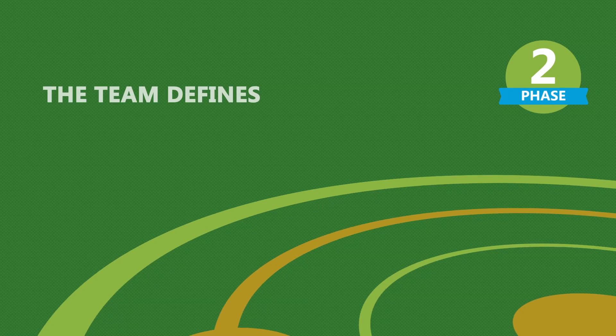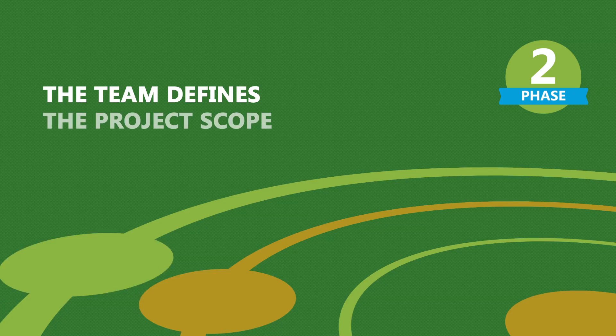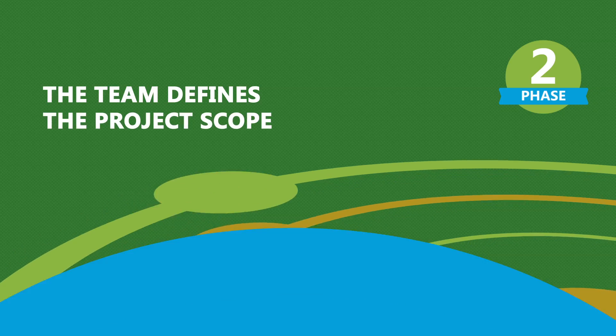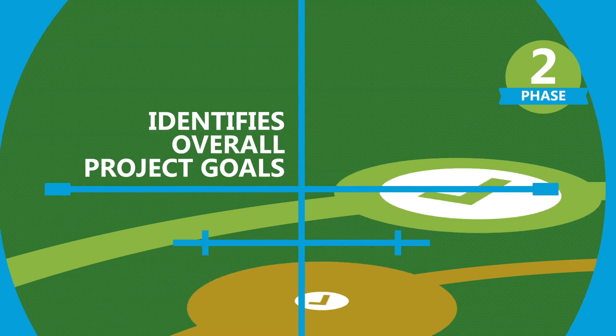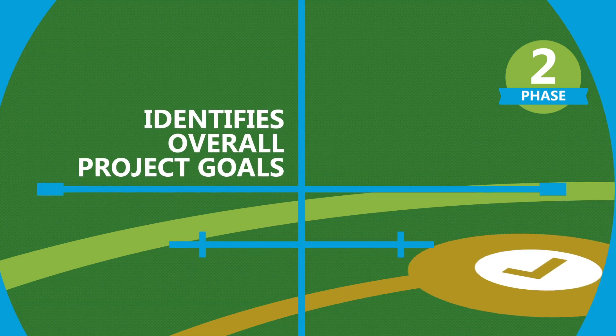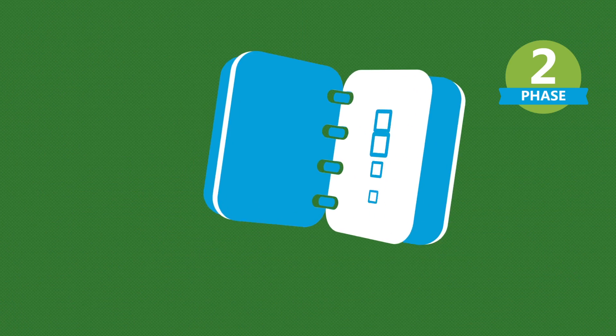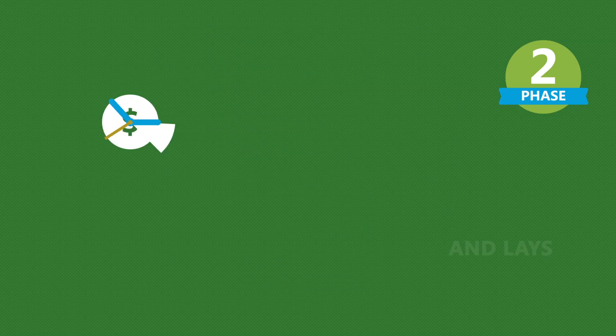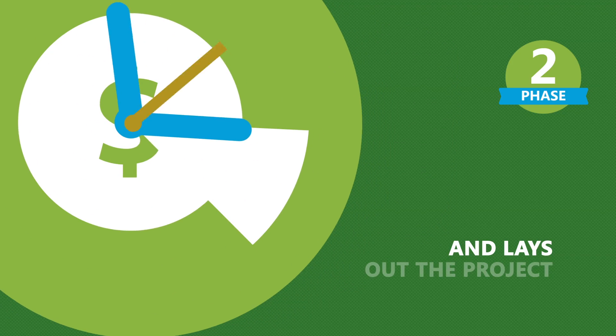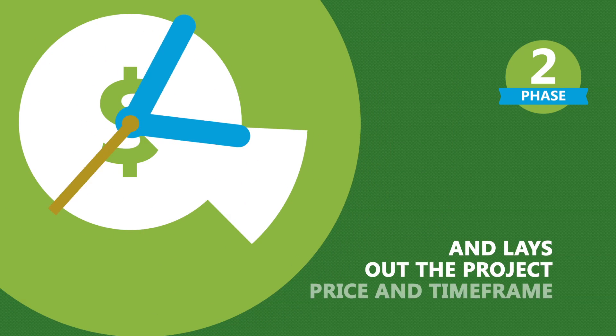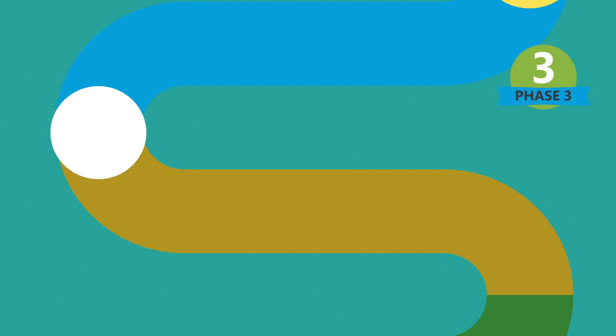Phase 2. The team defines the project scope, identifies overall project goals, specifies the current problem to be fixed, and lays out the project price and time frame.